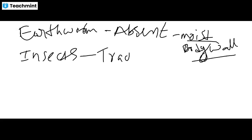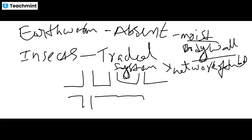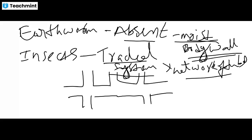In insects, the respiratory organs are the tracheal system. The tracheal system is a network of tubes. In insects, the tracheal system is present as the respiratory organ and the mechanism of breathing and exchange of gases occurs through this tracheal system.